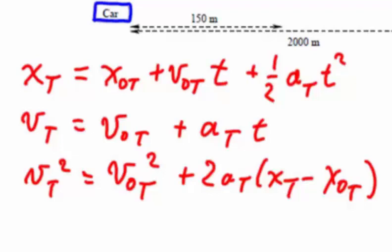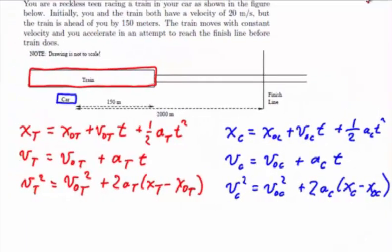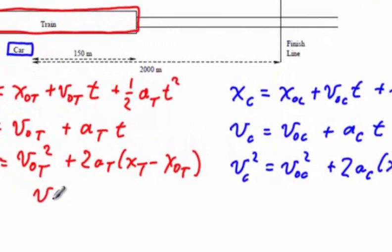And the similar set of equations for the car look the same except every position, velocity, and acceleration has been labeled with a subscript C to represent the car. Let's go through the original language of the problem and see if we can pull out some of the variables. The first number we see in the problem is 20 meters per second and that refers to both your velocity and the train at the initial moment. Since these are initial velocities, we see that V0 of the train is 20 and we also see that V0 of the car is 20.